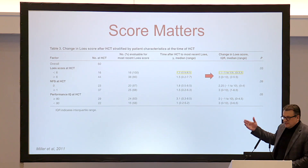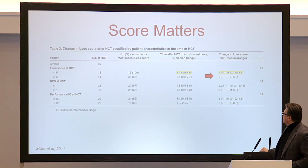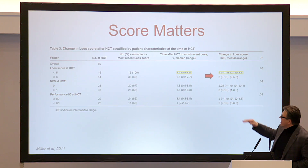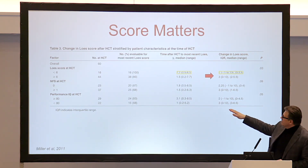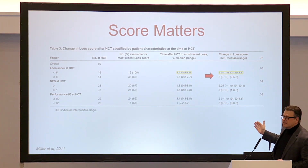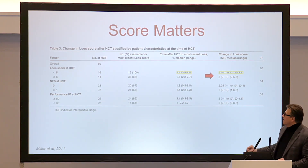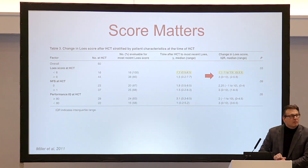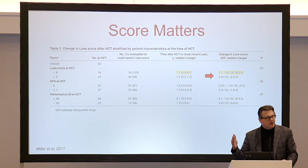The score matters. Looking at change in median Loes score depending on how you came in — Loes score at transplant less than 6 versus greater than or equal to 6 — at two years post-transplant: if you came in at less than 6, your change in MRI score is about 1 point. If you came in at greater than 6, your median change is 3 more points after transplant. Again, coming in with a lower burden of disease is going to portend a much better outcome.